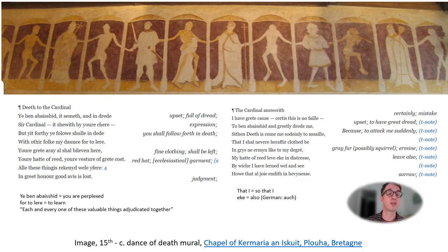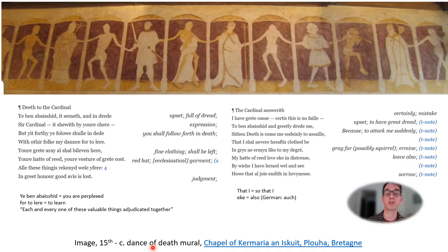Death to the Cardinal: 'You've been abashed and in dread, Sir Cardinal — it should be your chair, but it's for thee you follow, sure and dead, with other folk may dance for to lair. Your great array, all shall be leaving here, your hat of red, your vesture of great cost — all these things reckoned well you fear, and great honour, good avise is lost.' The Cardinal answereth: 'You have great cause, certes, this is no fail, to be abashed and greatly dread me, sith death is come me suddenly to assail, that ye shall never hereafter clothed be, and gris and ermine — like to me the grey — me hath of red left me in distress, by which ye have learned well, and say, who that all joy endeth in heaviness.'